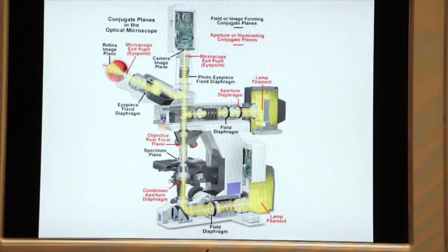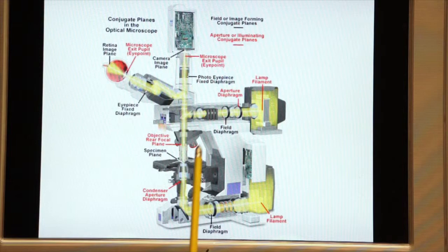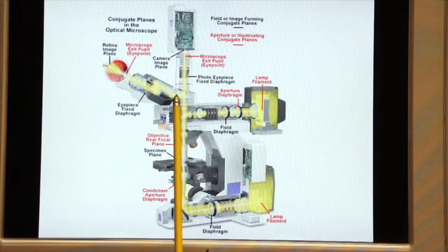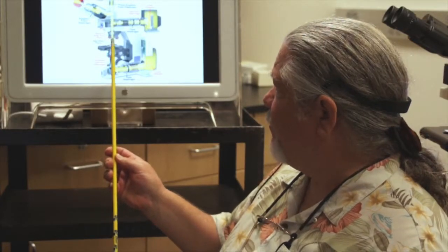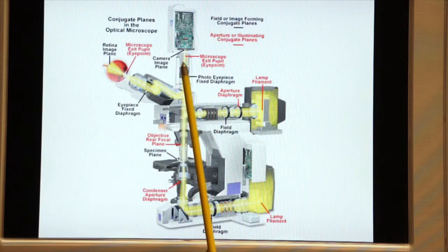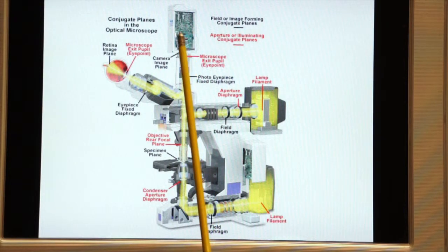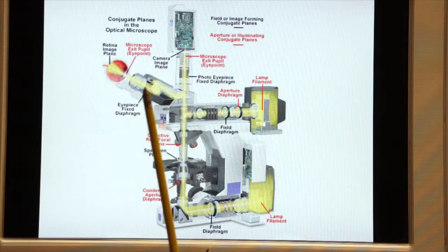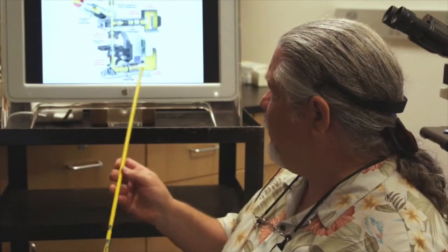In the objective, all of the useful magnification takes place. This is where all the high resolution images are formed. Those images are then projected through the nose piece and through this vertical illuminator, which we'll talk about in a second, and into the binocular or trinocular tube for the observer to see. So that's transmitted light.